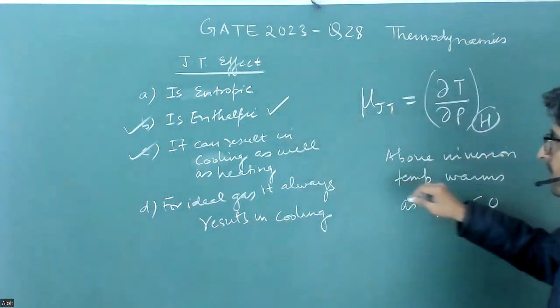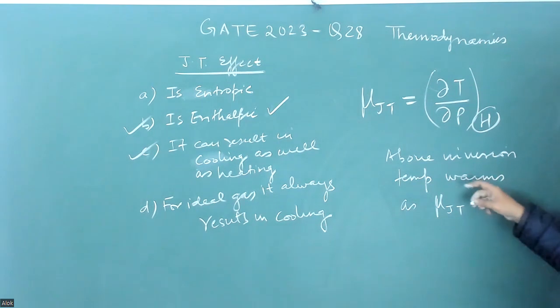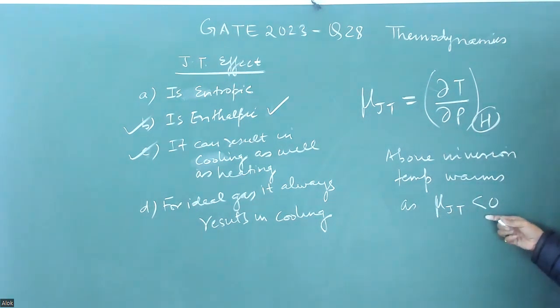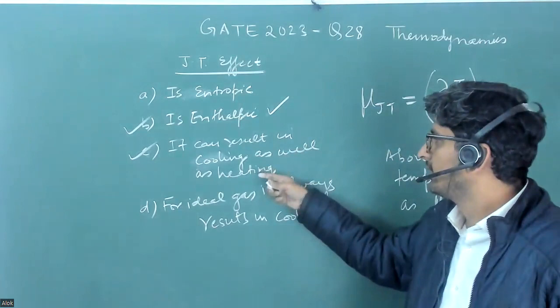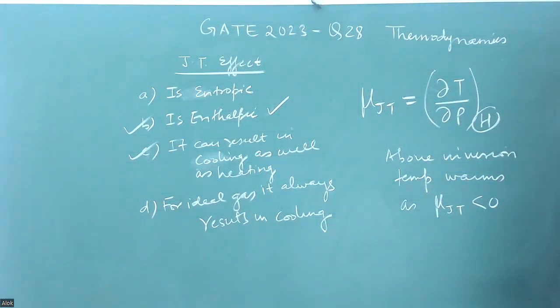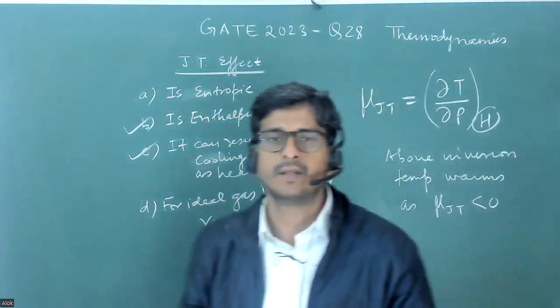Above the inversion temperature, the value of μ_JT is negative, so the fluid warms. Otherwise, it cools down. It can result in cooling as well as heating depending on whether you are above or below the inversion temperature. This depends on the sign of μ_JT being negative or positive. Thank you.